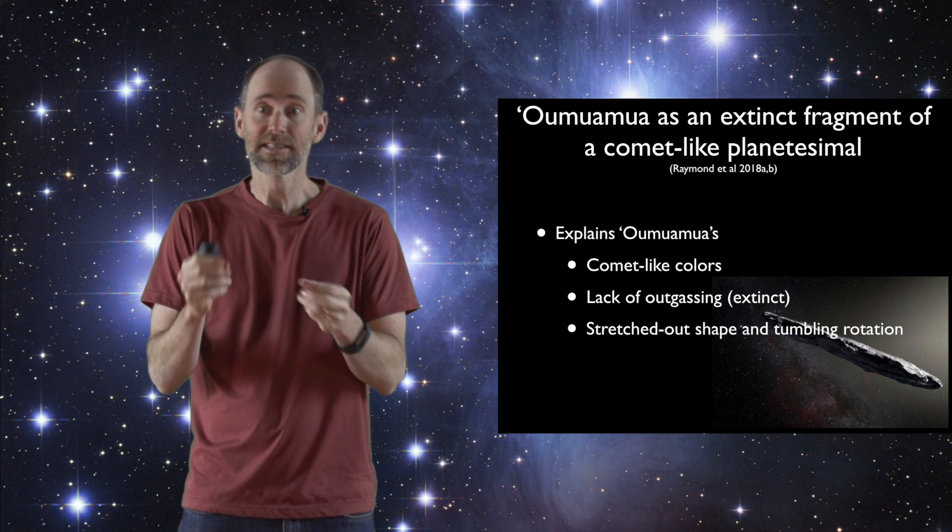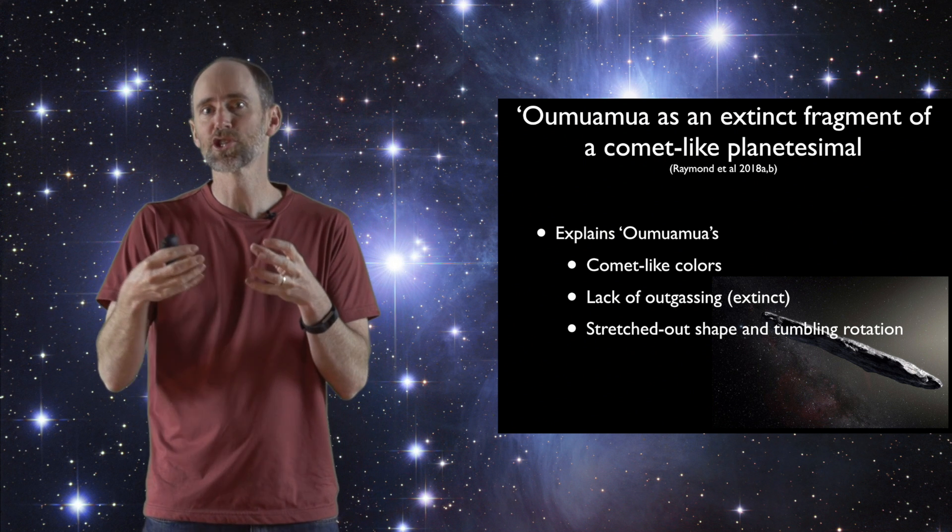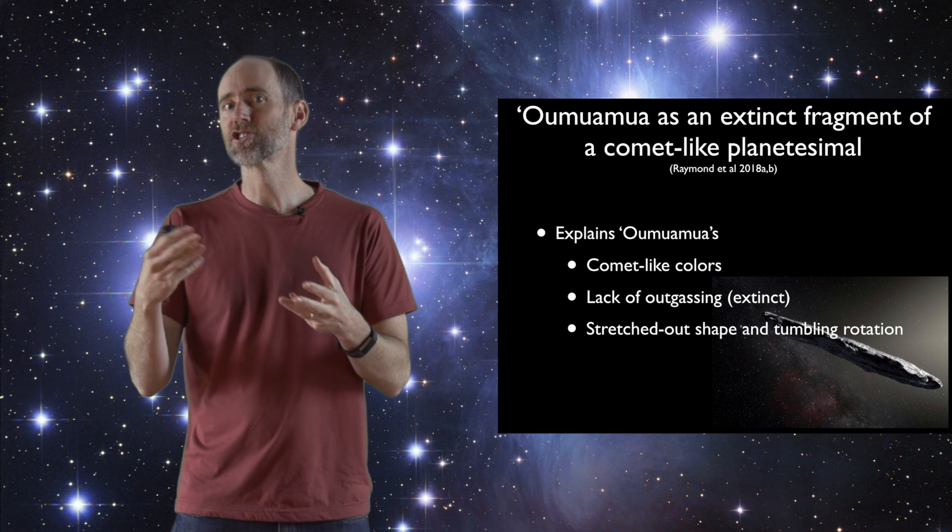And if that's the case, it can explain why Oumuamua has comet-like appearance but doesn't behave like a comet, because it's extinct. And its close encounter with a giant planet, being torn into pieces, may explain why it has a stretched out shape and a strange tumbling rotation.